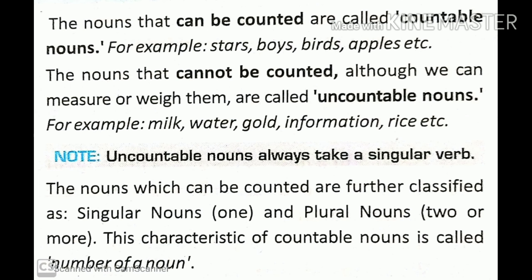The nouns that can be counted are called countable nouns. For example, stars, birds, apples, etc. The nouns that cannot be counted, although we can measure or weigh them, are called uncountable nouns. For example, milk, water, gold, information, rice, etc.